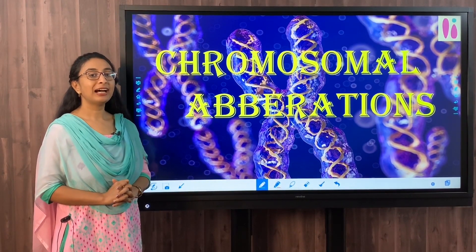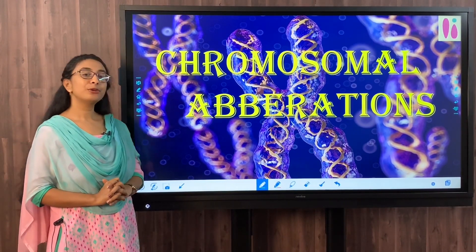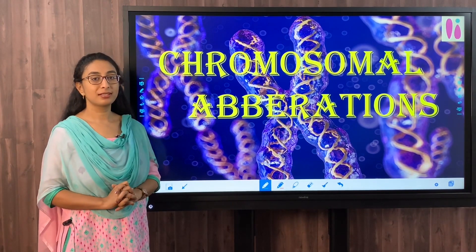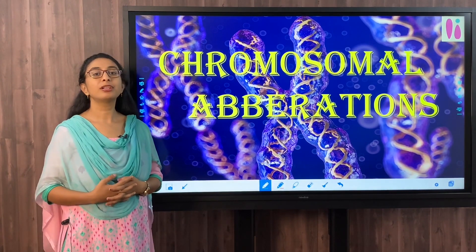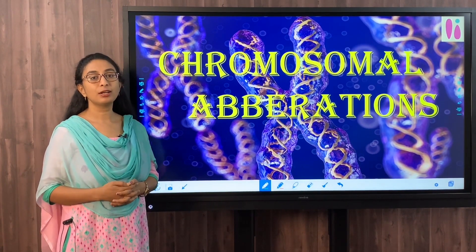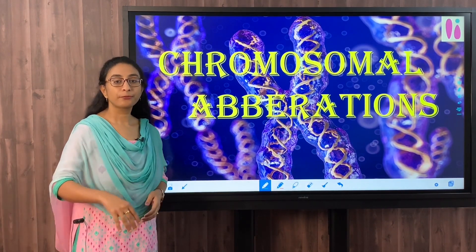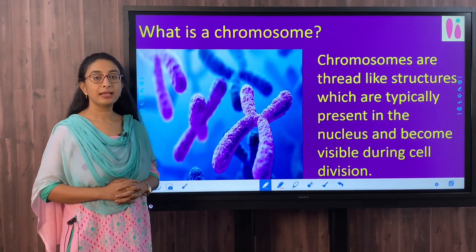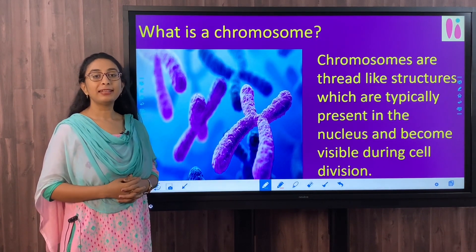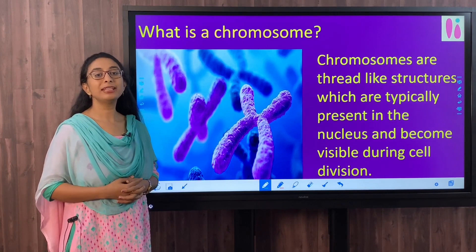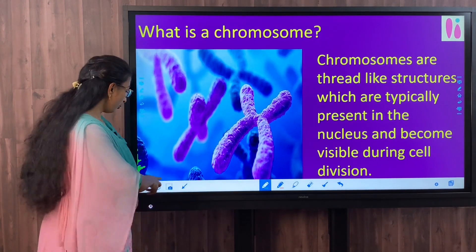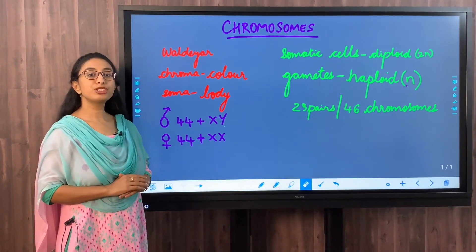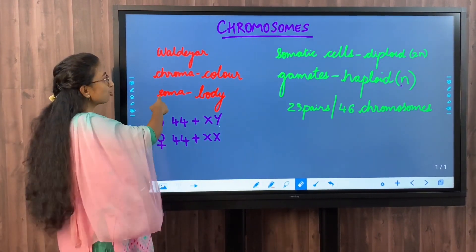Welcome to Candela. I'm Kavita. In this lecture we shall discuss an interesting chapter in physical anthropology - chromosomal aberrations. Before we discuss what aberrations are and the different kinds, let's get to know a few important details about chromosomes. Chromosomes are thread-like structures present in the nucleus. They carry the genetic material DNA and become clearly visible during cell division. The word chromosome was coined by Waldir in 1988.